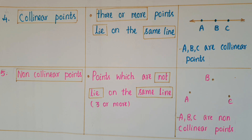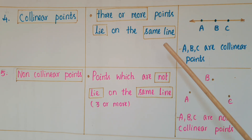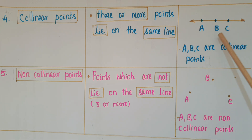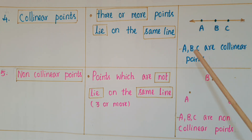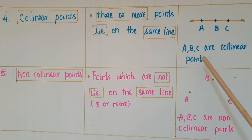Next one is collinear points. When three or more points lie on the same line, those are called collinear points. Here, A, B, and C are on the same line, so these are called collinear points.